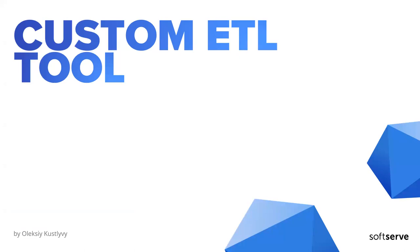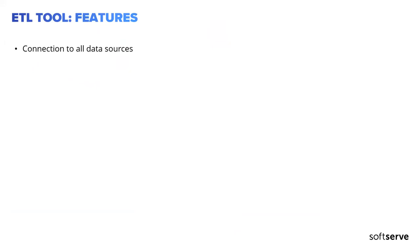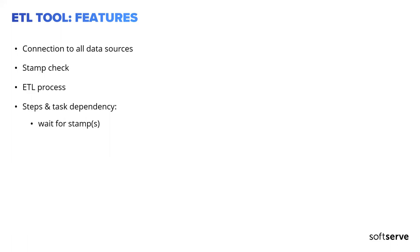Now let's talk about the custom ETL tool we are using. The tool does the following: it allows us to connect to all data sources we are using; it allows us to run a stamp check before any ETL steps are taken; it manages the entire ETL process; it allows us to set step and task dependencies so that steps or tasks are performed in the order we need; and lastly, it sets a stamp upon a successful run.